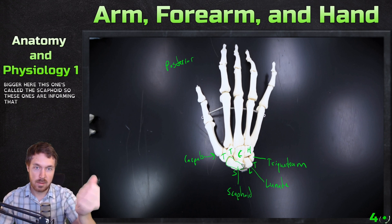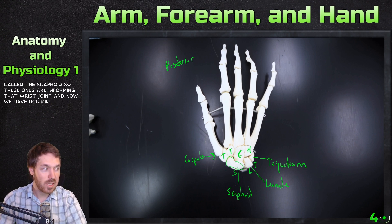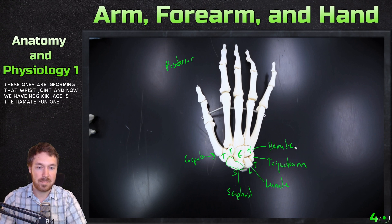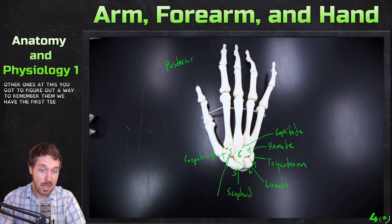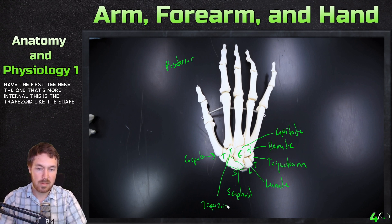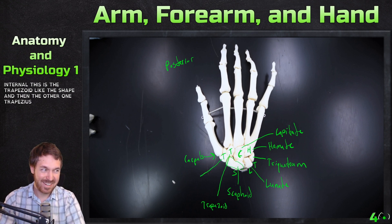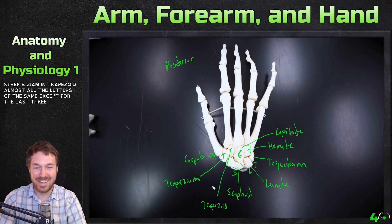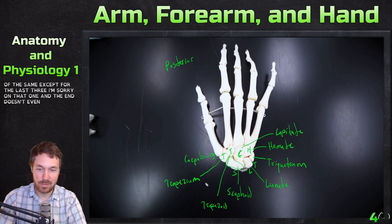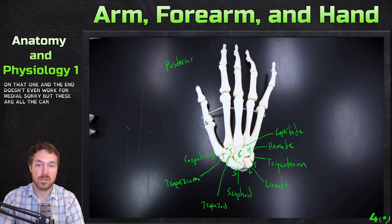In the distal row: H is the hamate, C is the capitate, and the two T's are the trapezoid — the more internal one — and the trapezium. We're looking at the posterior side of the wrist with the thumb on one side, so this would be the right wrist. Below the carpals are the metacarpals, numbered one through five starting from the thumb.